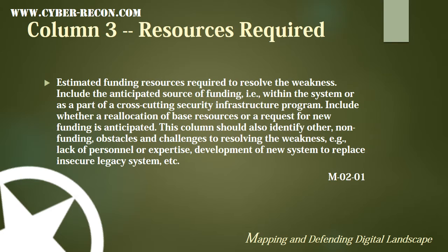Column 3 defines the resources required to fix a deficiency. According to OMB, this is defined as the estimated funding resources required to resolve the weakness, including the anticipated source of funding — i.e., within the system or as part of a cross-cutting security infrastructure program. Include whether the reallocation of base resources or a request for new funding is anticipated. This column should also identify other non-funding obstacles and challenges to resolving the weakness, like lack of security personnel or expertise, or development of a new system to replace insecure legacy systems.